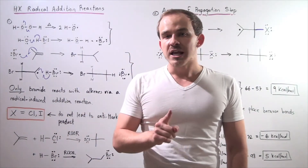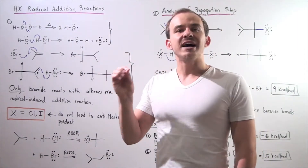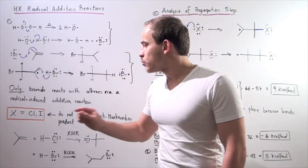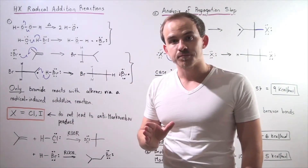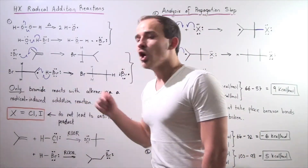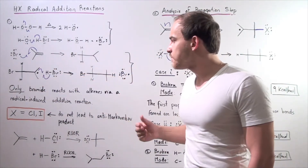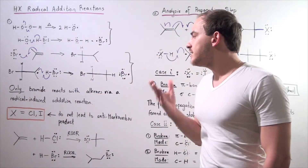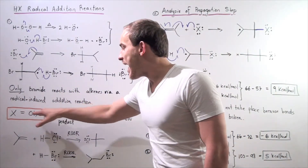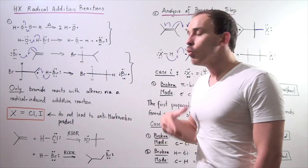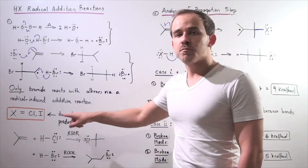It turns out that this radical reaction will not take place with either iodide or chloride. In other words, only bromide reacts with the alkene via a radical-induced addition reaction, so these two halogens will not lead to the anti-Markovnikov product.